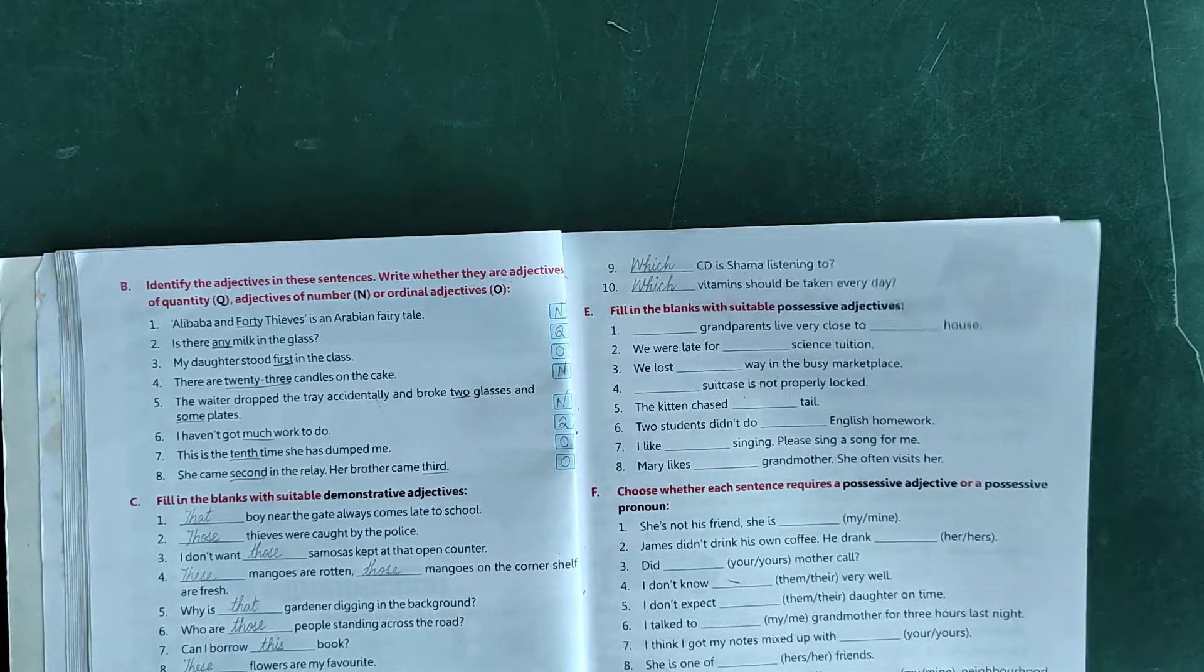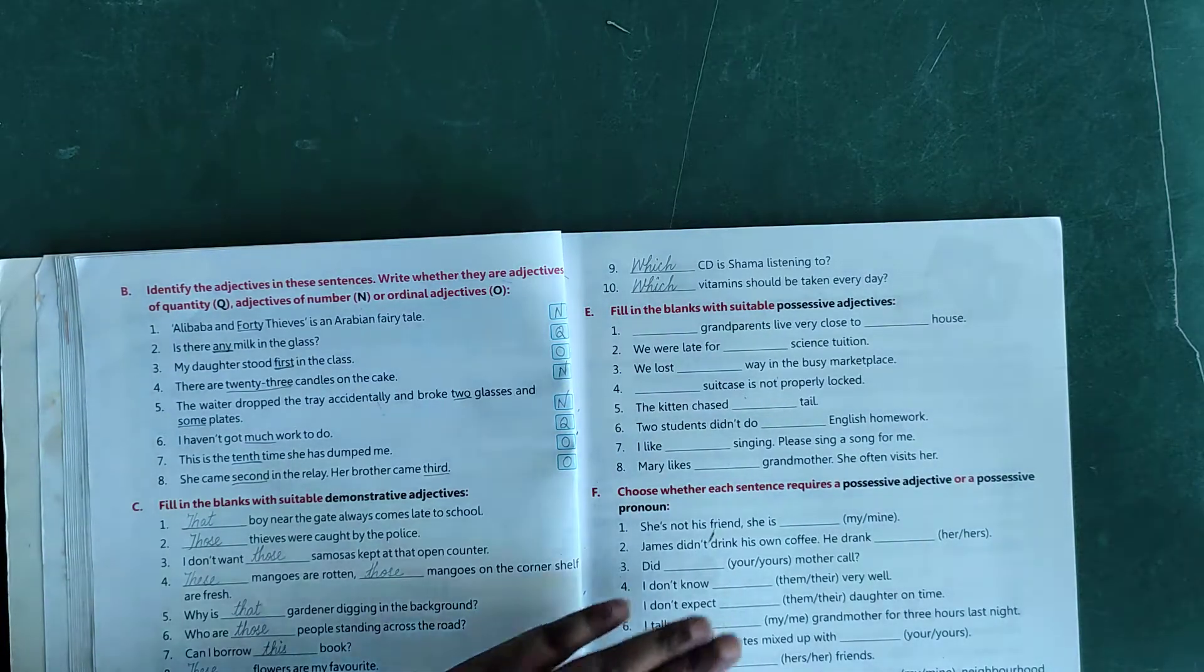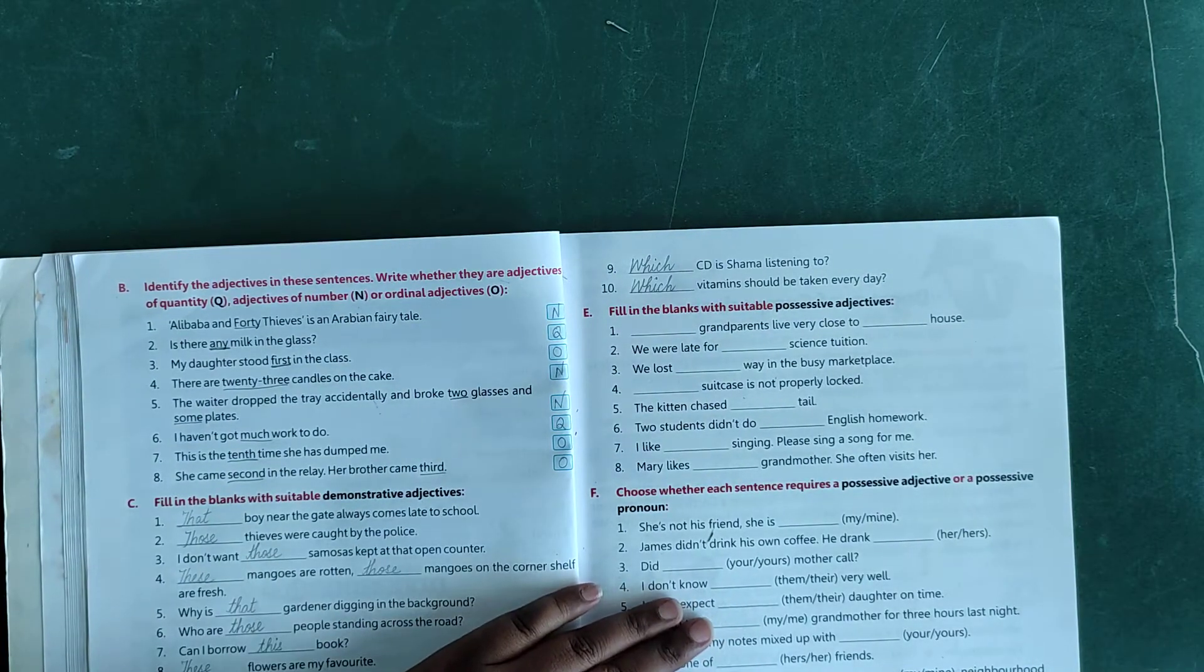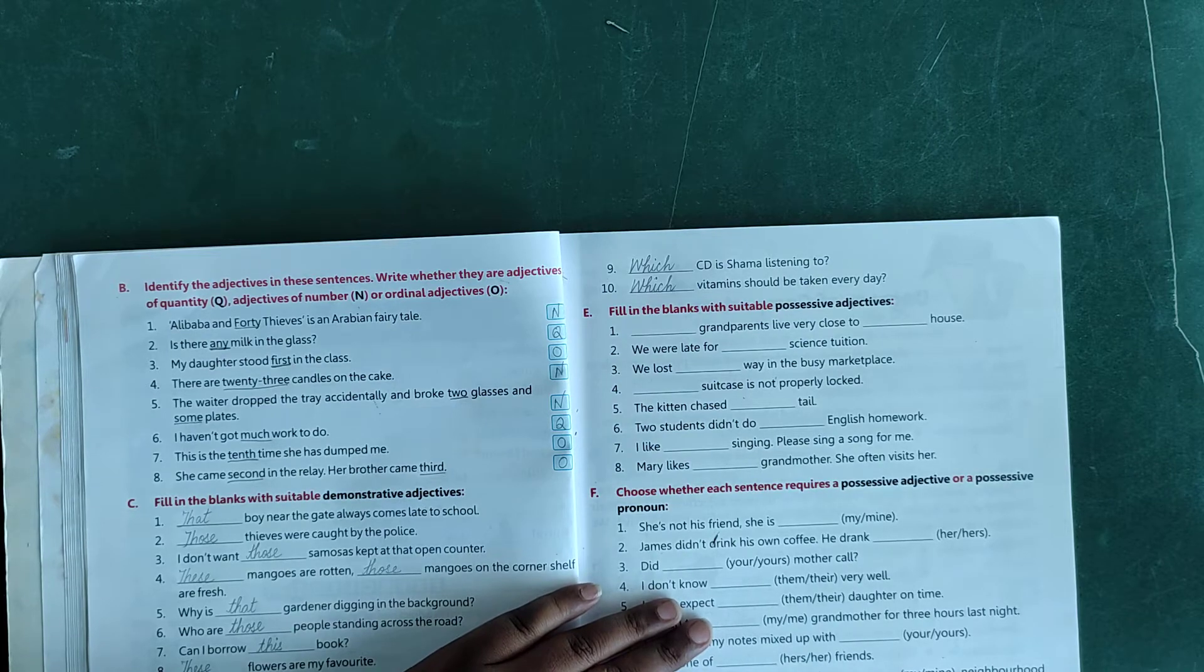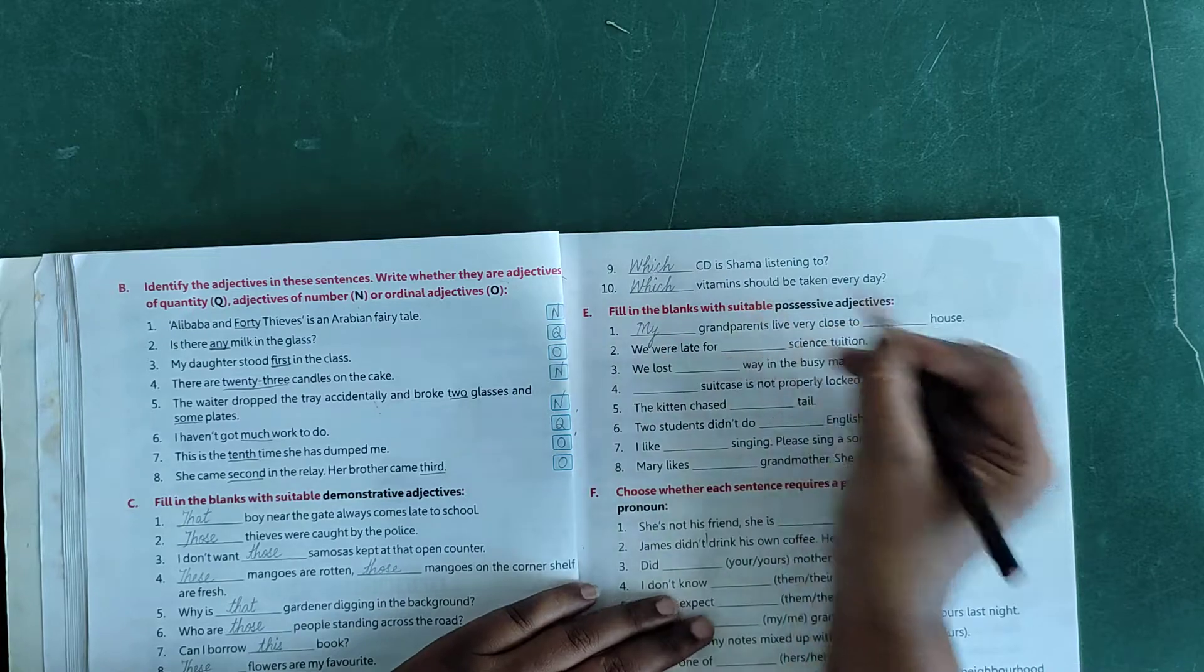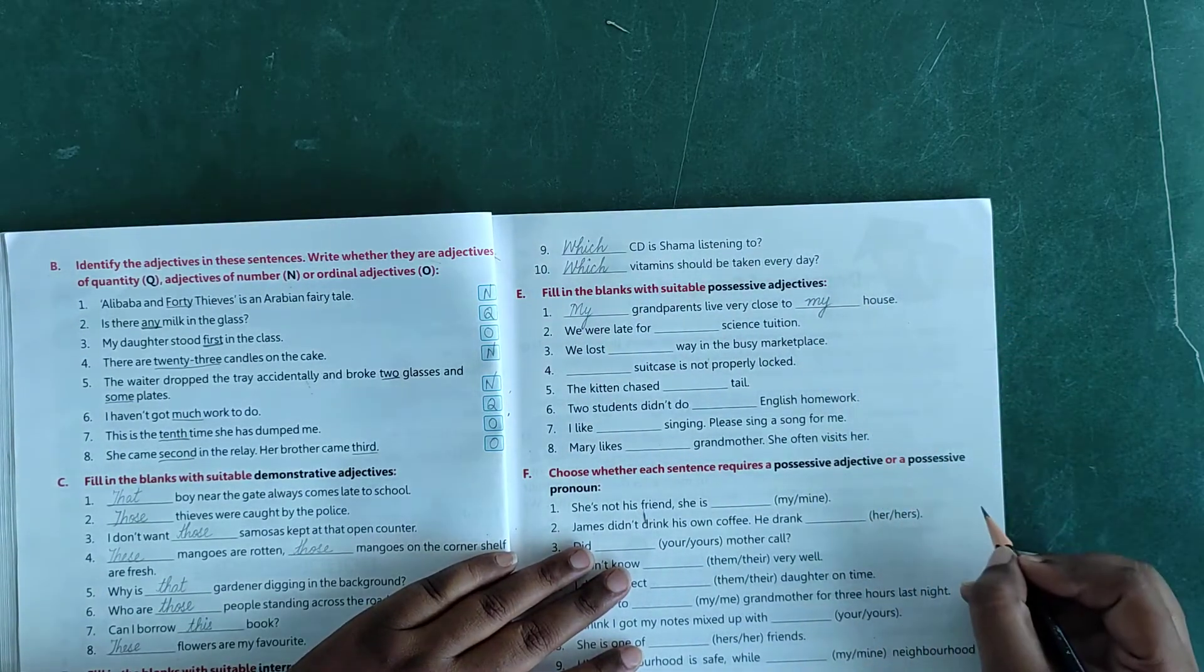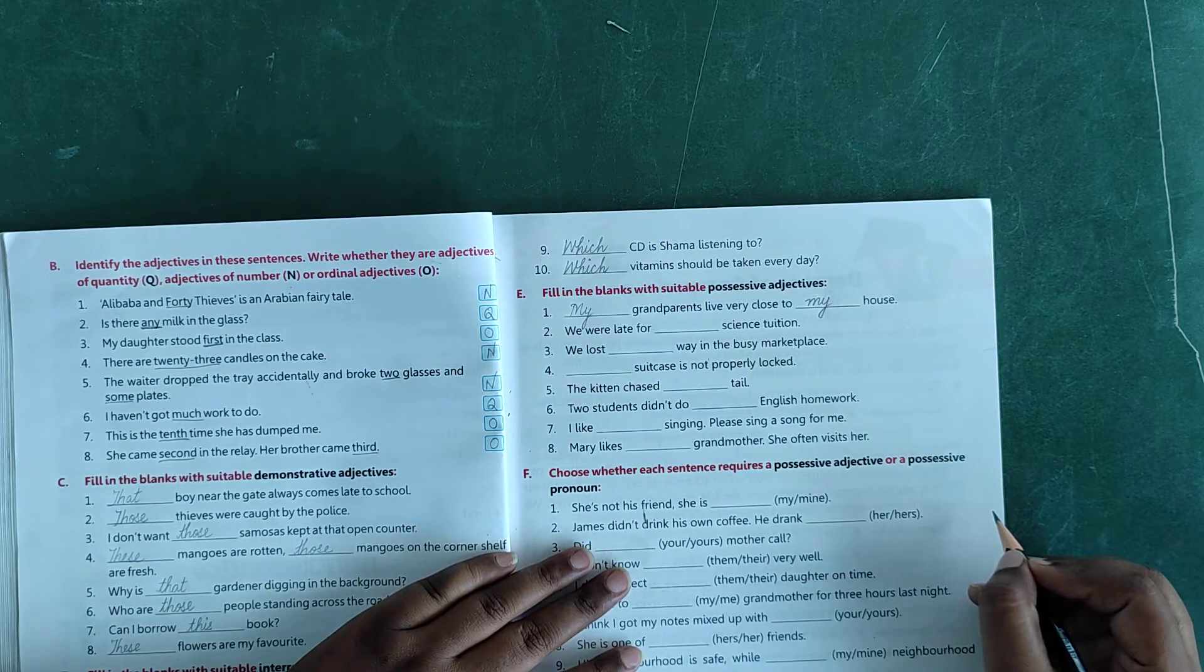Fill in the blanks with suitable possessive adjectives. Dash grandparents live very close to dash house. My grandparents live very close to my house.